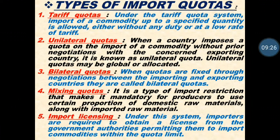For example, there are two countries — China and Russia. China is the exporter and Russia is the importer. If Russian government wants to impose import quotas or taxes, then Russian government will negotiate with the Chinese government, inform them, and tell them we are going to impose this much tariff and taxes on your commodity. Both countries negotiate with each other and after that the tariff and quotas are fixed. In unilateral quota the importer does not inform the exporter, but in bilateral quota both importer and exporter negotiate and agree before quotas are fixed.